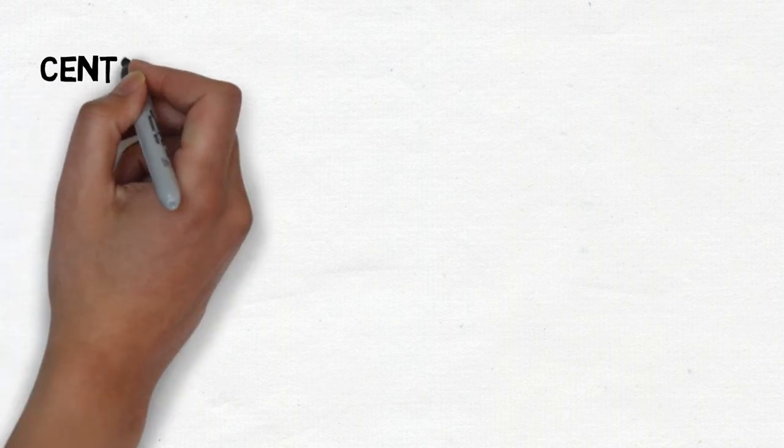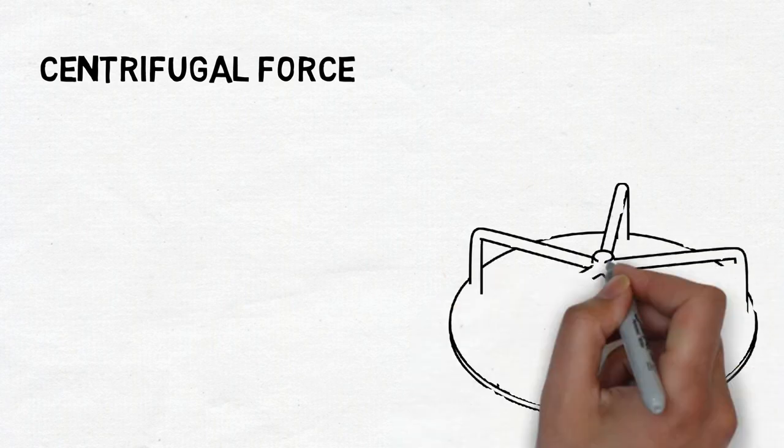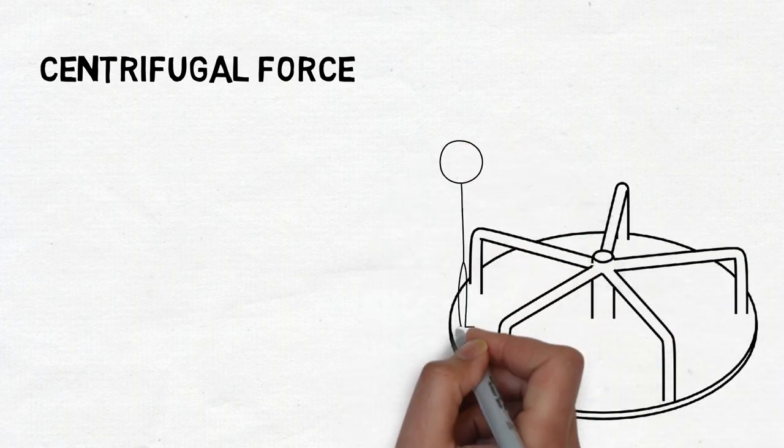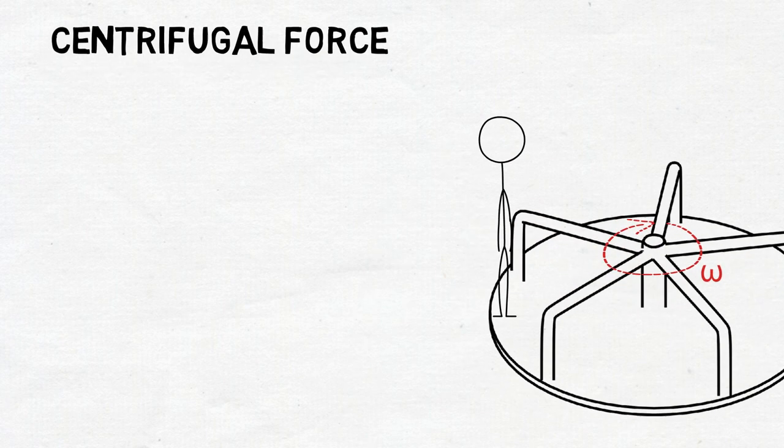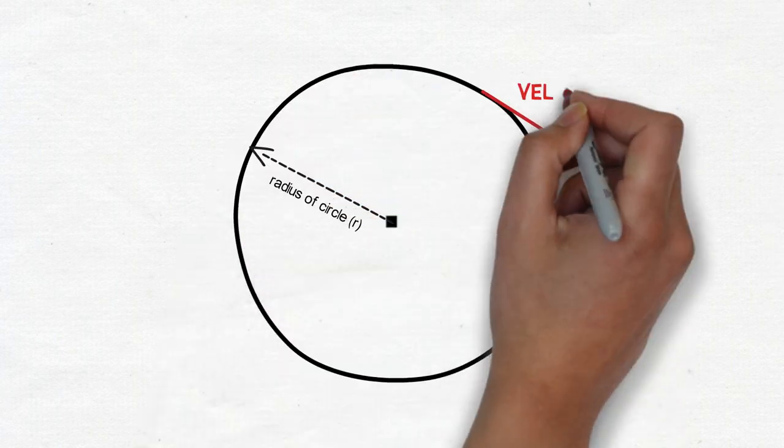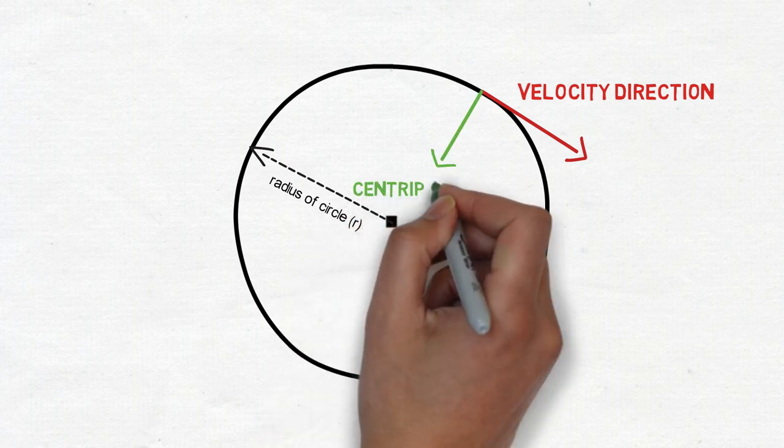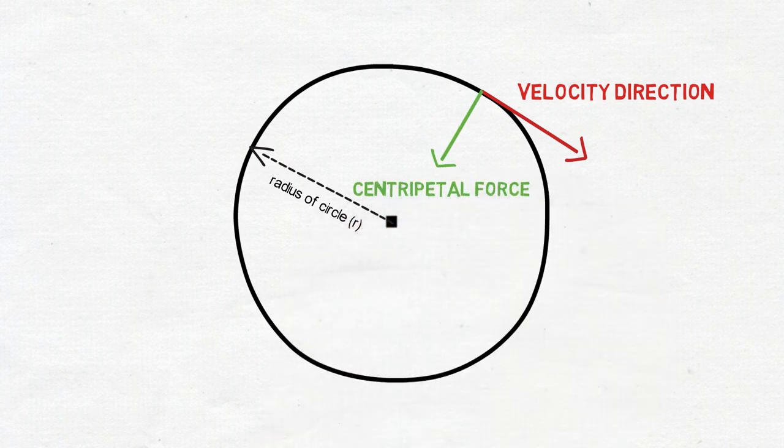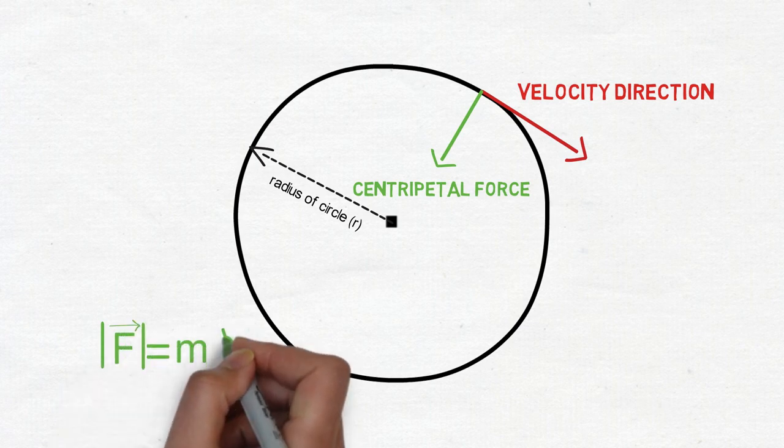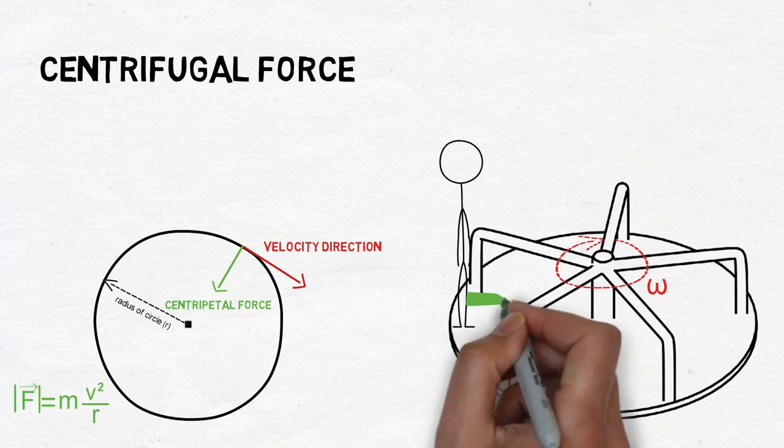The second fictitious force is called the centrifugal force. Imagine Mario is standing on a merry-go-round which is spinning with an angular velocity omega. To an inertial observer on the ground it is easy to see that to keep Mario in his rotational motion a continuous centripetal force must be applied perpendicular to his direction of motion. This is equal to mv squared over r. This force will be pushing Mario radially inwards.